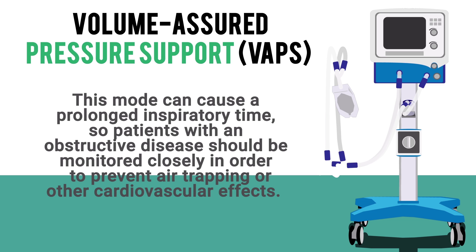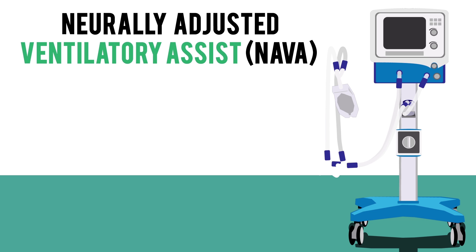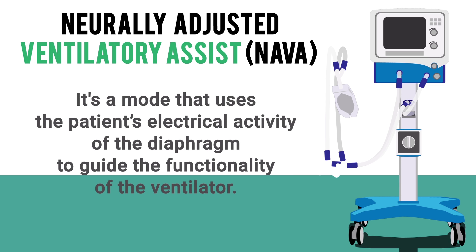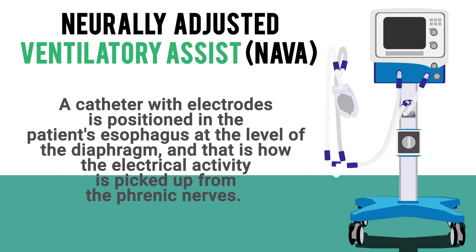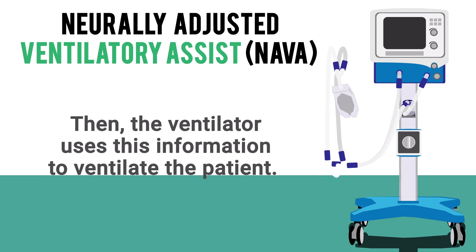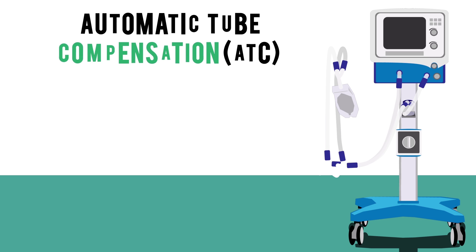Next up we have NAVA, or neurally adjusted ventilatory assist. This is a mode that uses the patient's electrical activity of the diaphragm to guide the functionality of the ventilator. A catheter with electrodes is positioned in the patient's esophagus at the level of the diaphragm, and that is how the electrical activity is picked up from the phrenic nerves. The ventilator then uses this information to adequately ventilate the patient.